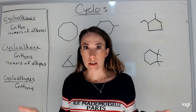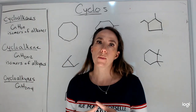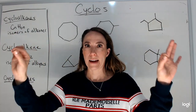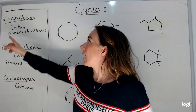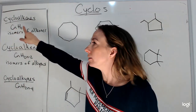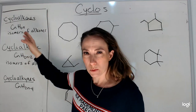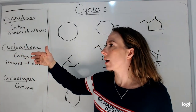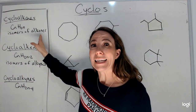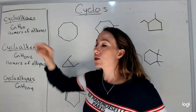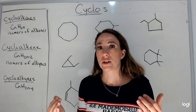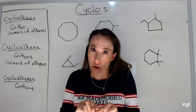These are carbons in a circle with all single bonds between them. Their general formula is CnH2n — in order to take that line and attach it into a circle, you have to take off two hydrogens. They are isomers, meaning they have the same molecular formula as their alkene counterpart. A straight chain with a double bond has the same number of hydrogens and carbons as a circle with single bonds.